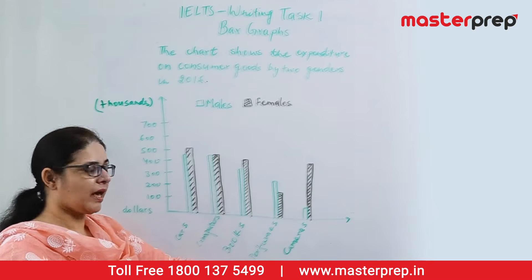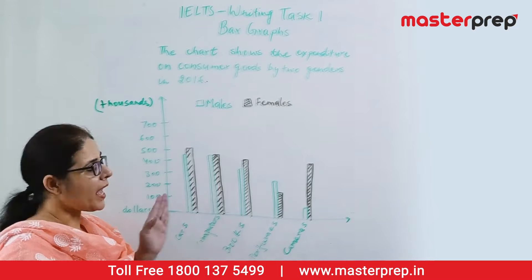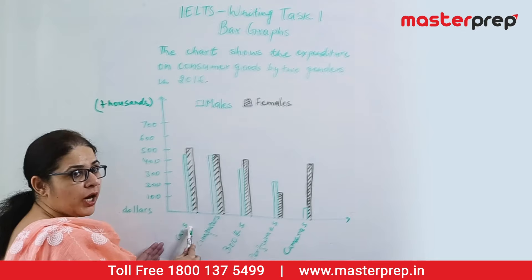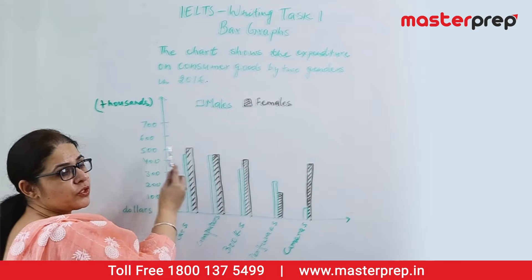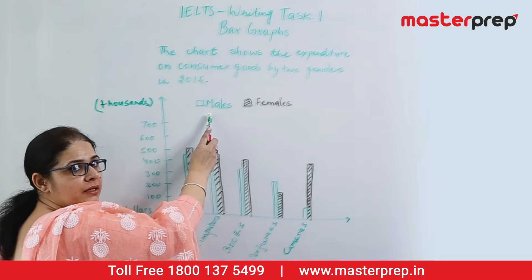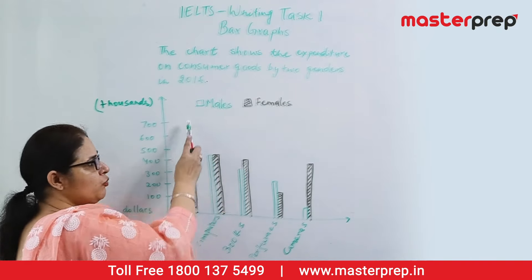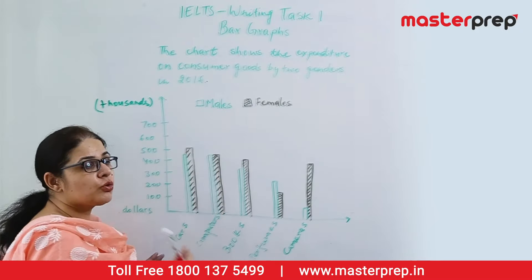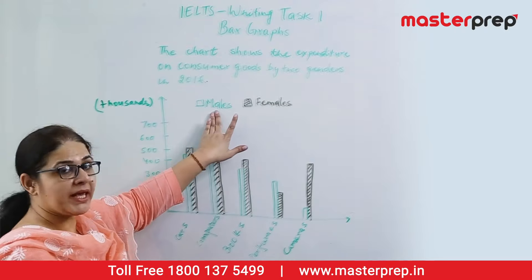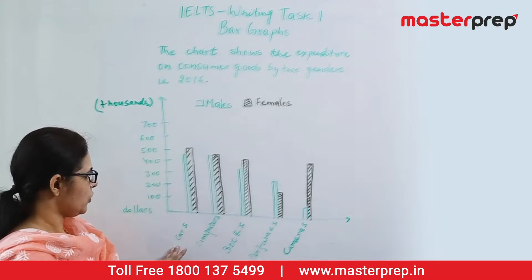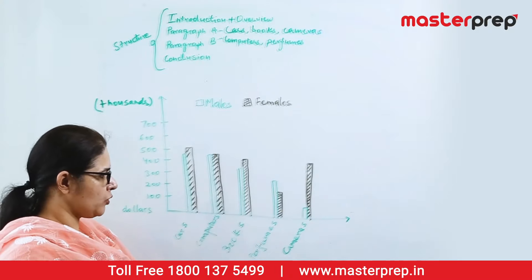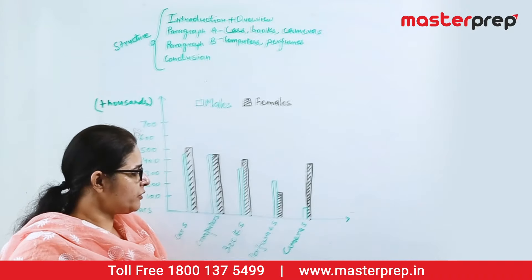If you look, there is an x-axis which has five consumer goods: cars, computers, books, perfumes, and cameras. And the y-axis has the expenditure in dollars in thousands. For example, if you look at the first bar for cars — the green one — it is about $450,000. The key shows that the green bars are for males and the black bars are for females. So this tells you how much males spend on cars in thousands of dollars.